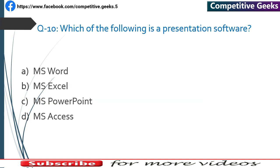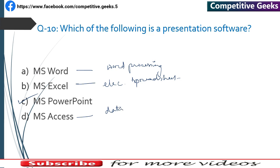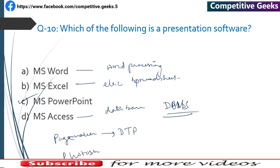Number 10: Which of the following is a presentation software? The answer is C — MS PowerPoint (Microsoft PowerPoint). Microsoft Word is Word Processing Software, Microsoft Excel is Electronic Spreadsheet software, and MS Access is Database Management software (DBMS). Pagemaker is DTP software, Photoshop is graphics software, and VLC Media Player and Windows Media Player are multimedia software.